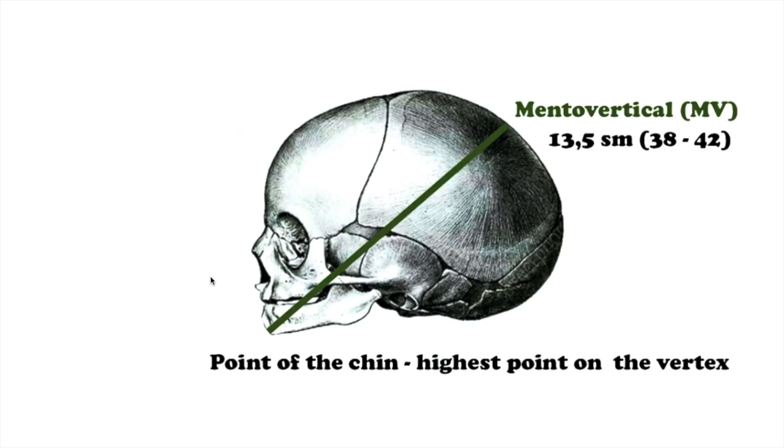The large oblique dimension, or diameter mento verticalis, is measured from the chin to the most distant point of the occipit, makes 13.5 cm. The corresponding circumference makes 38 to 42 cm.